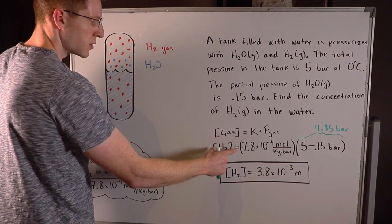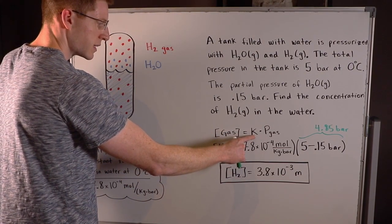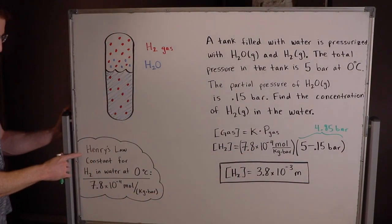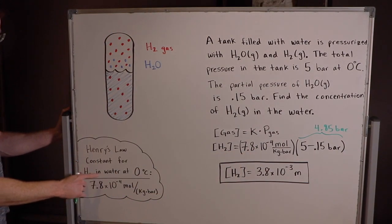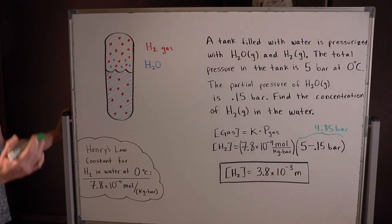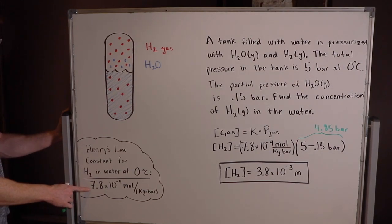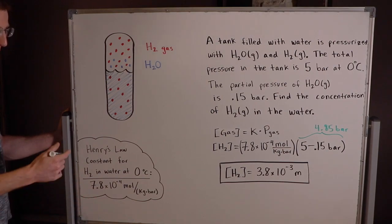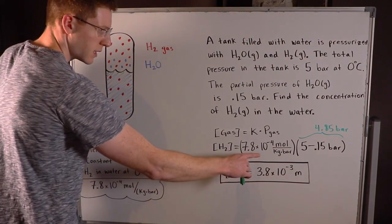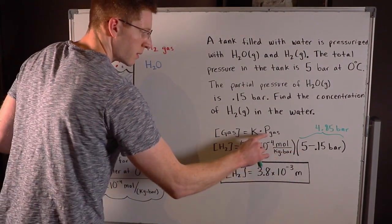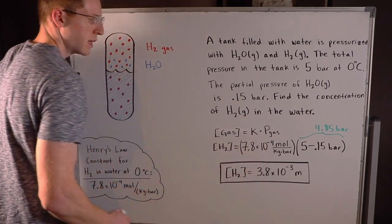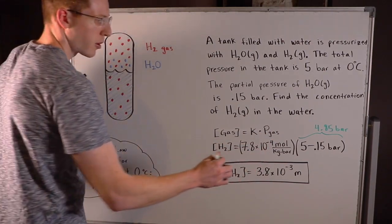So I want concentration of H2 gas and of course I need the K for the Henry's Law constant for H2 in water at 0 degrees Celsius and you should be able to find this on a table, 7.8 times 10 to the negative 4 moles per kilogram times bar. So I plug that in here and of course the partial pressure of the gas, this is very important, this is a key part of this problem.